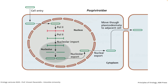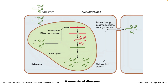Here's Pospiviroidae — viroids that don't encode a ribozyme. The circular viroid gets into the cell, goes into the nucleus, and then Pol2 of the host, a DNA-dependent RNA polymerase, copies this RNA to make concatemers — one, two, three genomes. In the nucleolus, it's cleaved by cell enzymes, these circularize, and then they're exported and can move to the next cell through ports called plasmodesmata.